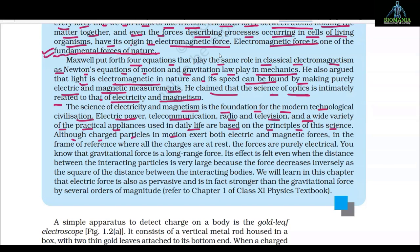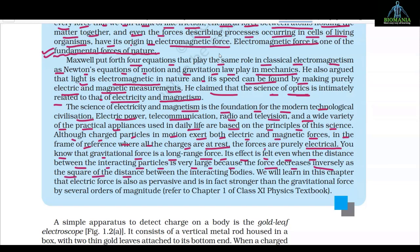Although charged particles in motion exert both electric and magnetic forces, in a frame of reference where all the charges are at rest, the field around them is known as the electrostatic field — the forces are purely electrical and there is no magnetic force. So magnetic force arises only when charge is in motion. You know that gravitational force is a long-range force — its effect is felt even when the distance between interacting particles is very large, as the force decreases inversely as the square of the distance. Electric force is also as pervasive and in fact stronger than gravitational force by several orders of magnitude.